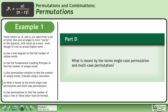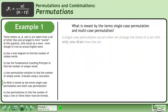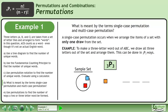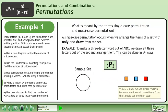In part D, what is meant by the terms single case permutation and multi case permutation? A single case permutation occurs when we arrange the items of a set with only one draw from the set. For example, to make a three letter word out of ABC, we draw all three letters out of the set and arrange them. This can be done in 3P3 ways.